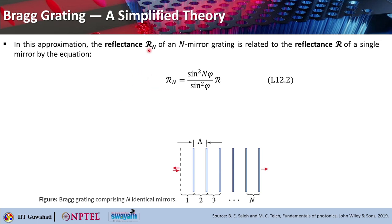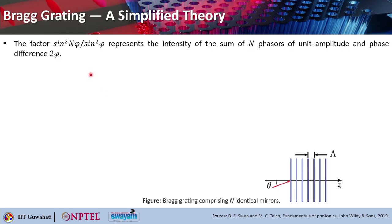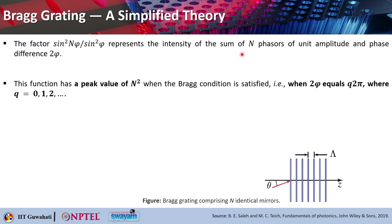In this approximation, you can calculate the reflectance of the entire structure as R_n, where n reminds you that you are talking about an n-mirror grating. The overall reflectance of this grating relates to the reflectance R of a single mirror as: R_n equals sin²(Nφ) over sin²(φ) times R. Here phi denotes the phase between the successive phasors, whereas 2phi represents a round trip. The factor sin²(Nφ)/sin²(φ) represents the intensity of the sum of n phasors of unit amplitude with phase difference of 2phi.